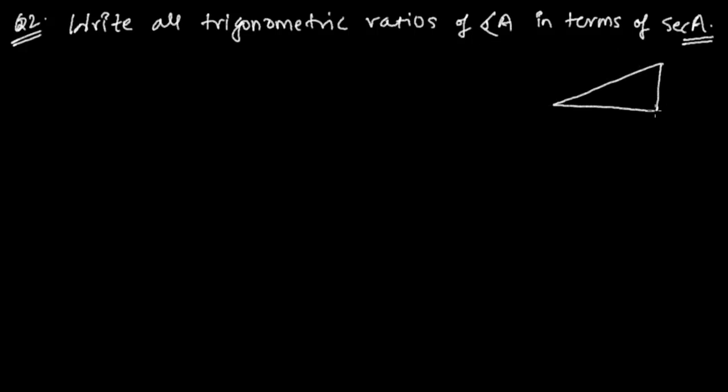Suppose this is a right angle triangle and this is A, B, C. This is 90 degrees. So they are saying that, the question is saying that we have to write all the trigonometric ratios of angle A.